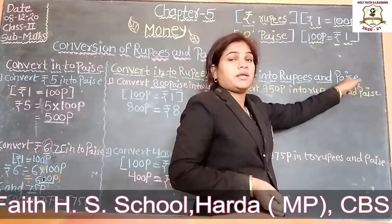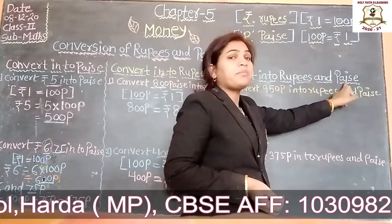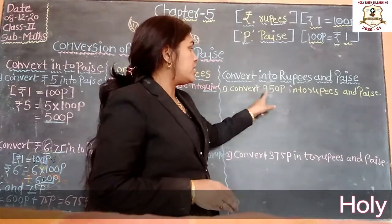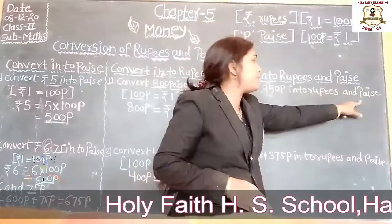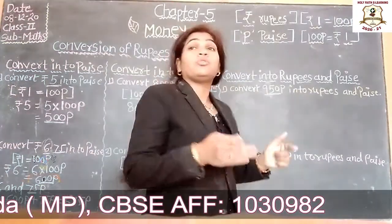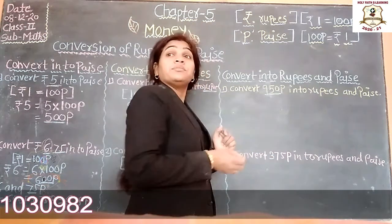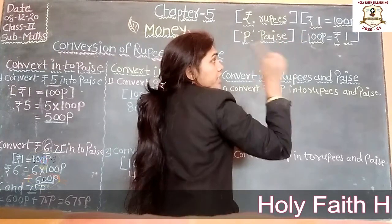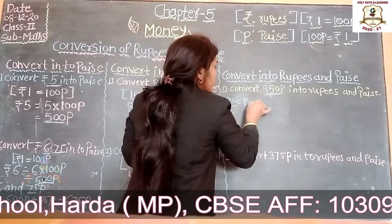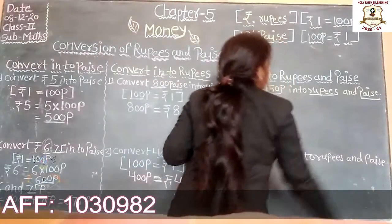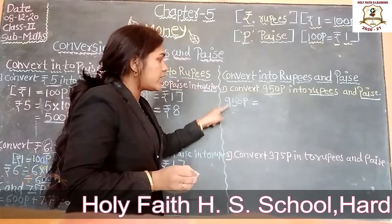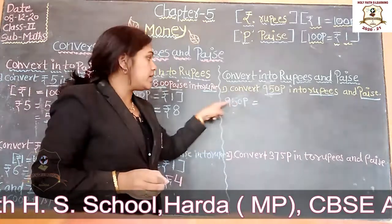Next, convert into rupees and paise. Convert 950 paise into rupees and paise. We know 100 paise is equal to rupees 1. If we place a dot, we get 9 rupees 50 paise. The left side of the dot is the rupees part, and the right side is the paise part.